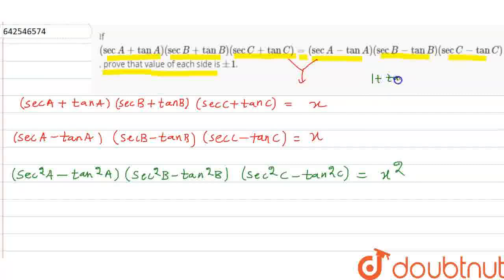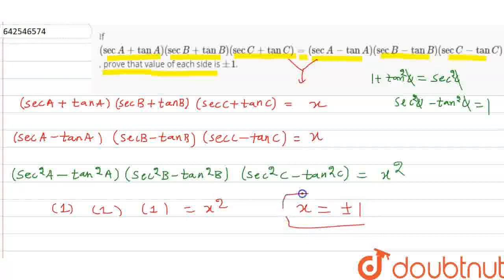We know 1 plus tan square theta is equal to sec square theta. That means sec square minus tan square is equal to what? 1. Similarly, we can say that this value is 1. This is also 1. This is also 1. And that is equal to x square. It means x is equal to what? Plus minus 1. So we can say that each value is plus minus 1. Thank you.